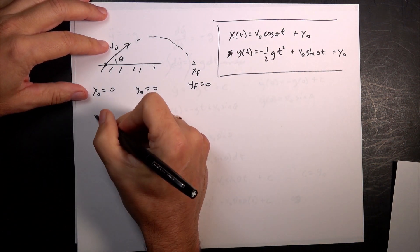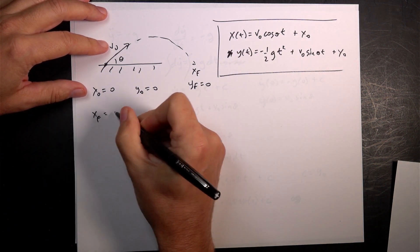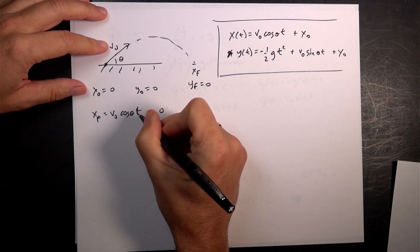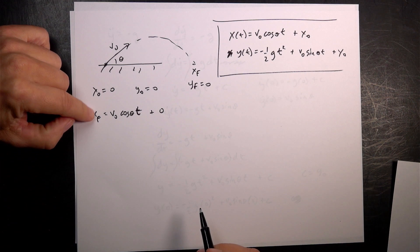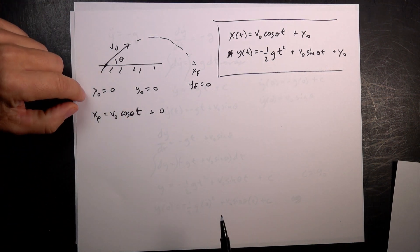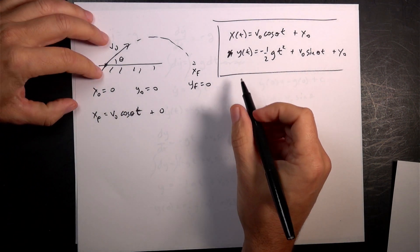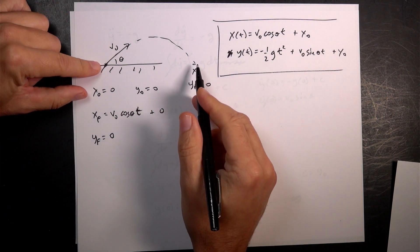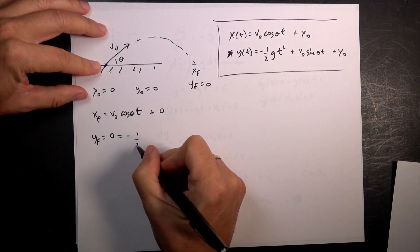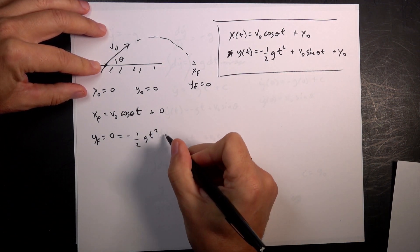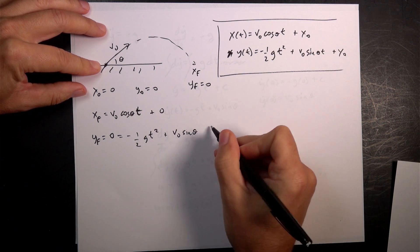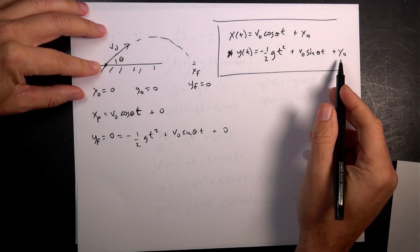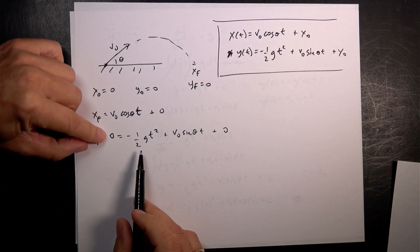If I write my x equation, I have x final equals v zero cosine theta times t plus zero. I know everything but t, so I can't solve this yet. Looking at the y equation, y final is zero because it gets back down to the ground. That equals negative one half g t squared plus v zero sine theta times t plus zero. So now this equation I can actually solve for t.